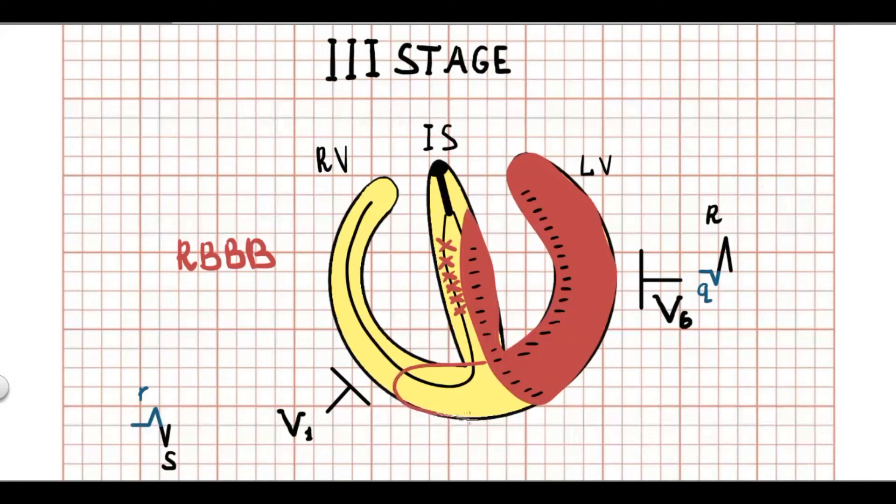The end stage of ventricular depolarization represents depolarization of right ventricle. So now depolarization wave goes slowly to the right ventricle because it goes through the muscle fibers which have lower conduction speed. Depolarization vector is directed to the positive electrode of V1. Therefore V1 represents R prime wave. The same depolarization is oriented away from V6. So in V6 we see wide S wave. S is wide because of slow depolarization due to conduction by muscle fibers. So QRS complex in V1 is RSR prime and in V6 is wide S wave.